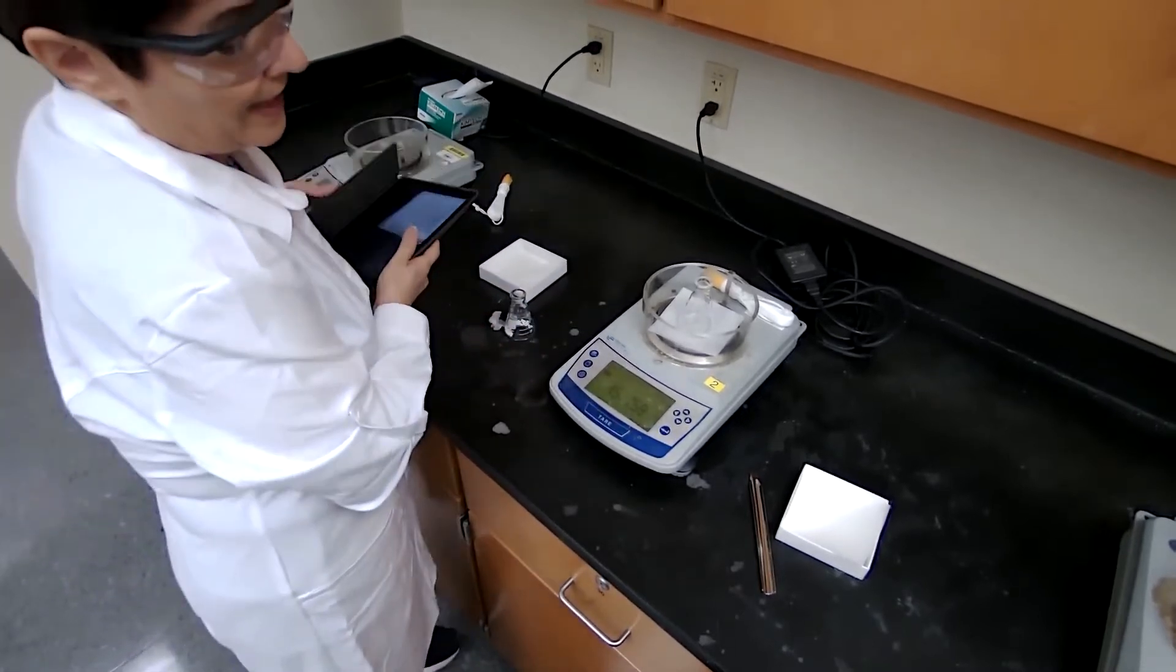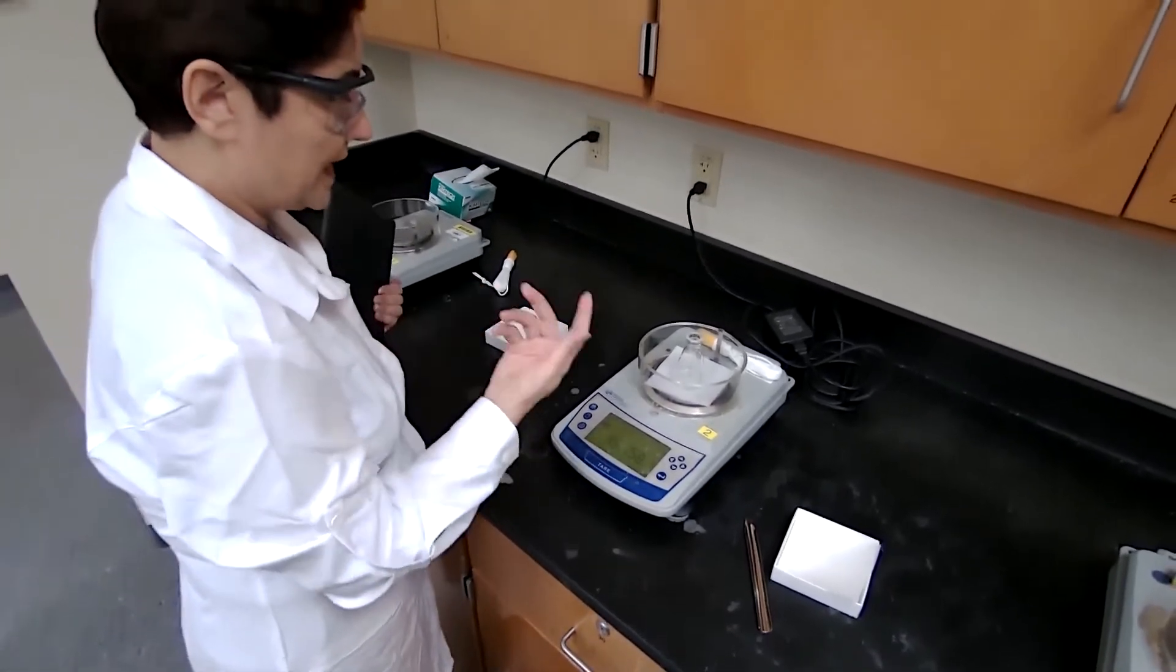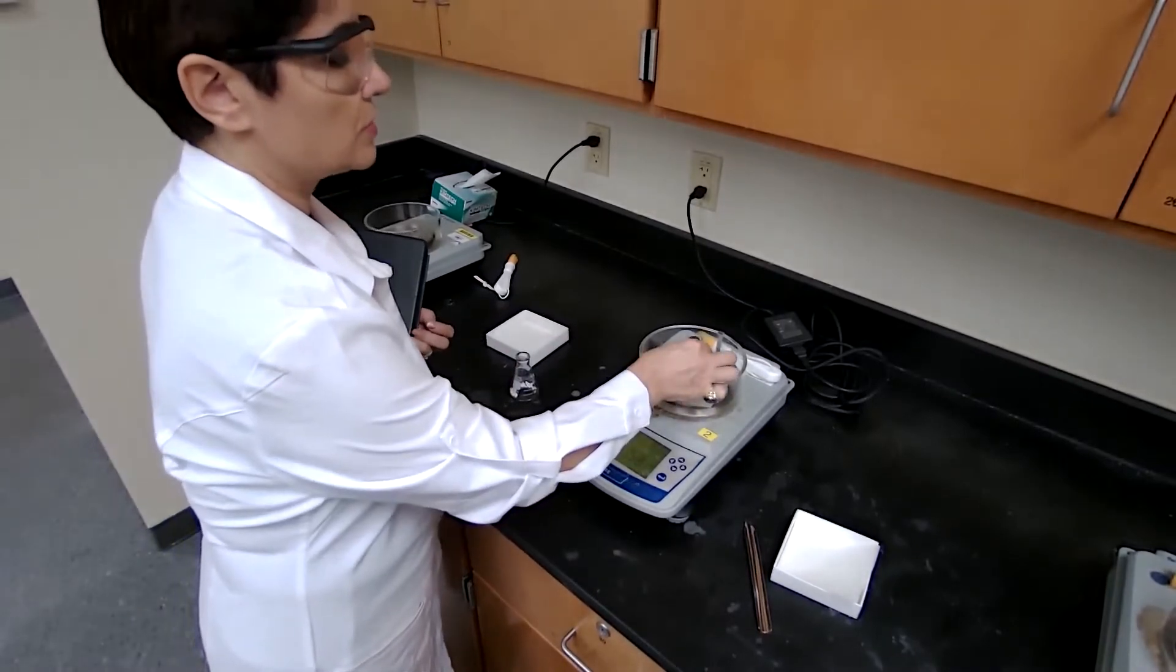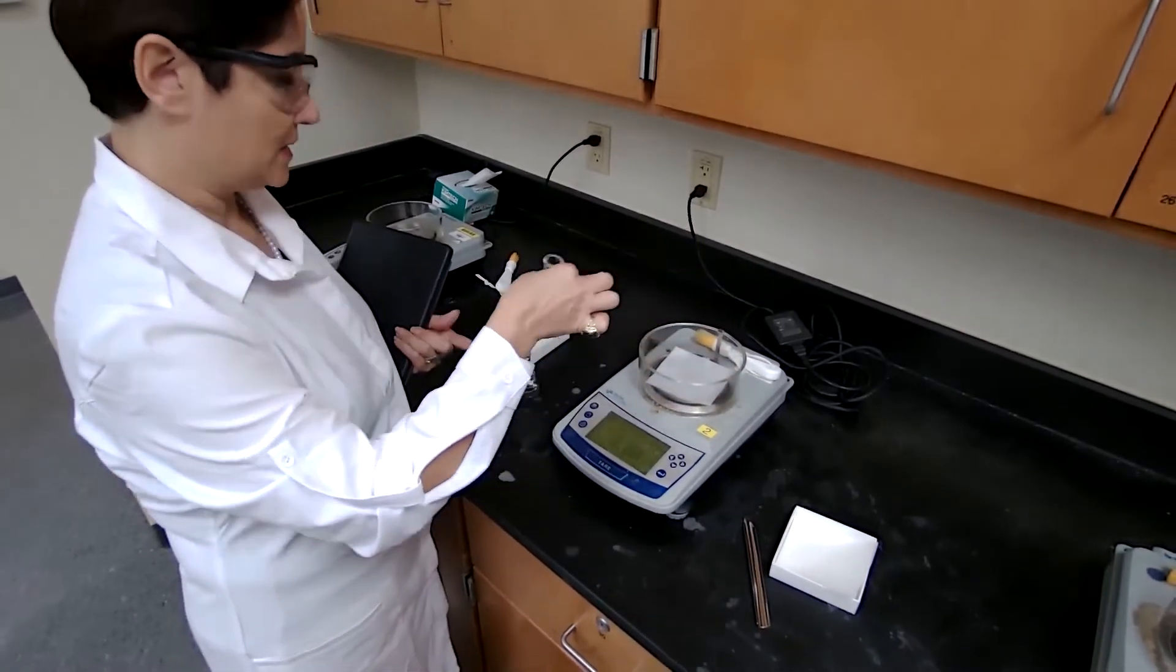Now we have the mass of the product for our calculation for percent yield. We do the chemical test at this point.